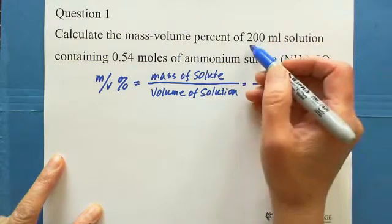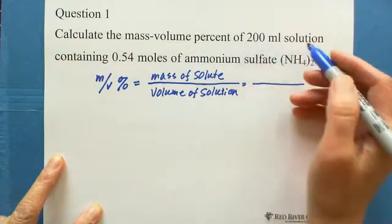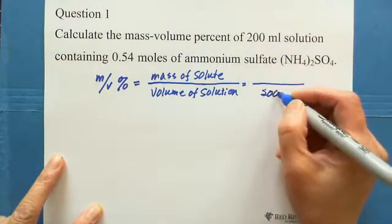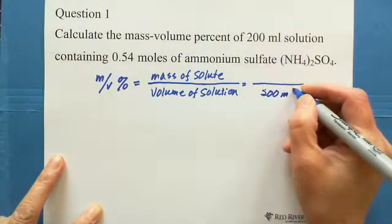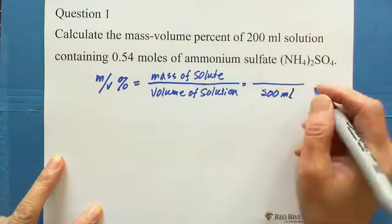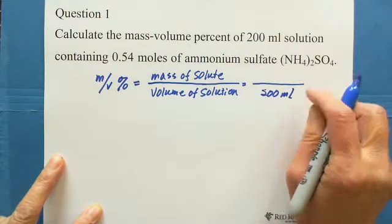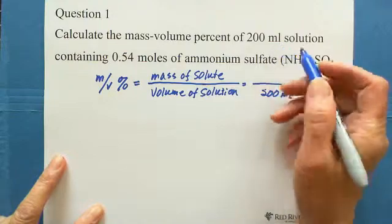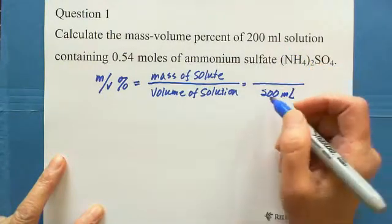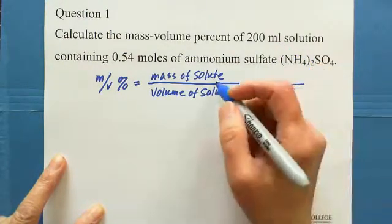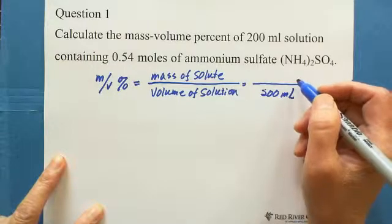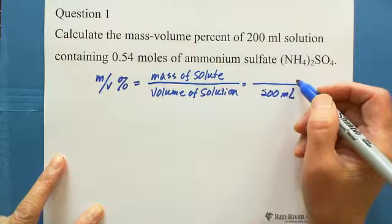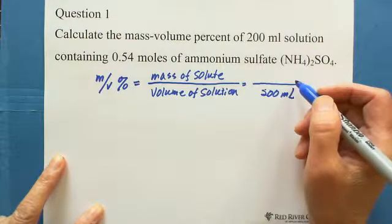We can first write 200 milliliter of solution on the bottom. If we choose milliliter as the unit of solution, then the mass should be grams, because 1 milliliter of water equals 1 gram.